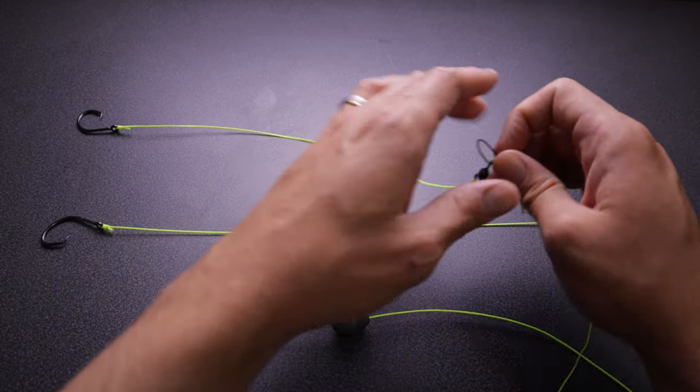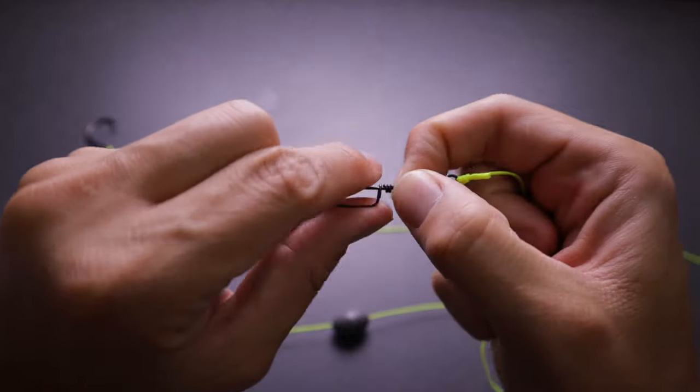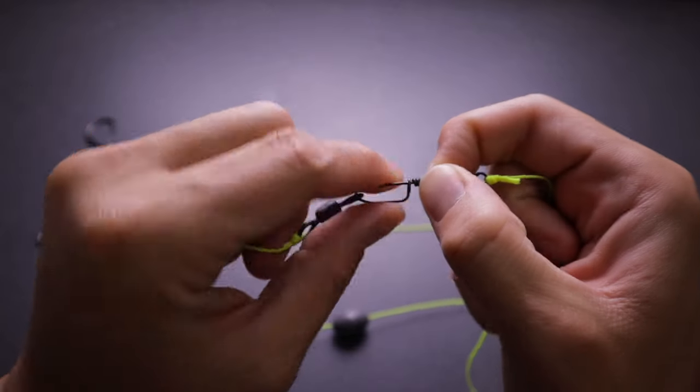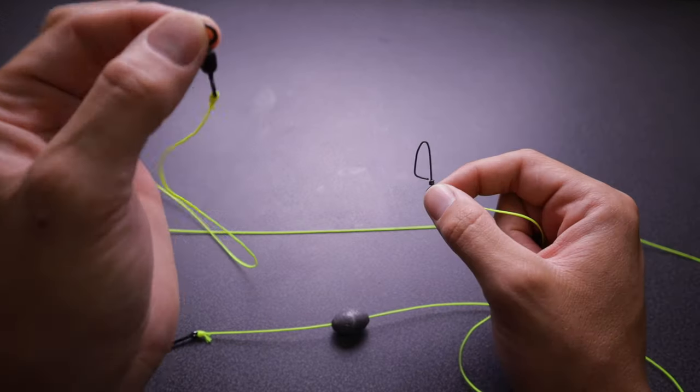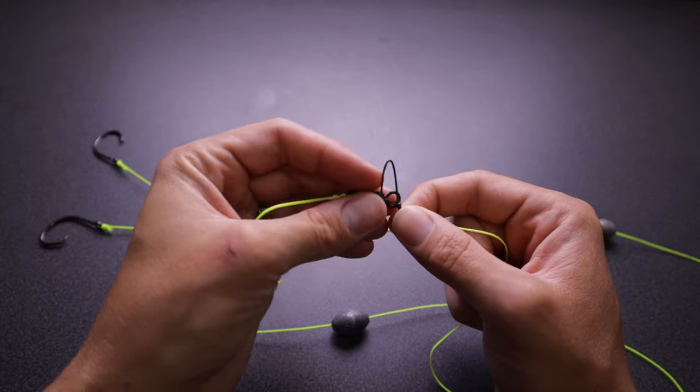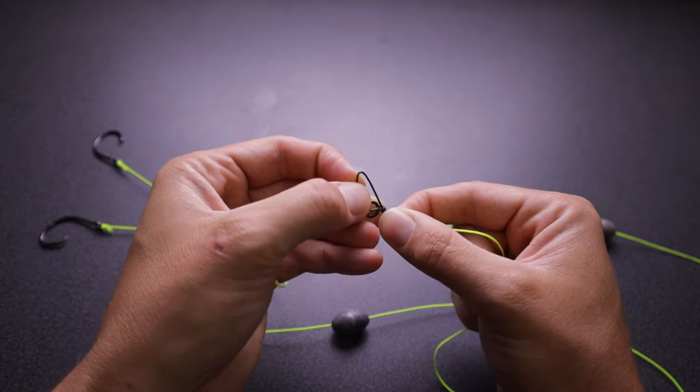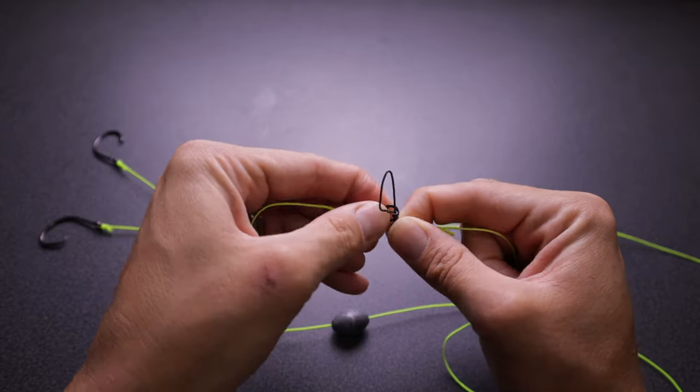That way if we do get cut off, all we have to do is take this snap swivel off, grab another rig that you already have pre-made, and then you just attach it to your snap swivel and you're back to fishing. You don't have to retie, you don't have to spend a lot of time prepping your rig back up. You just unsnap, snap, and you're back to fishing.